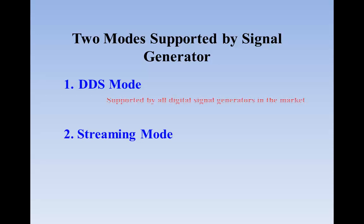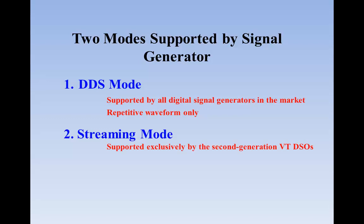Unique Feature 7: Streaming mode in signal generator. The second-generation VT DSOs support two signal generator modes: DDS mode and streaming mode. DDS mode is supported by almost all digital signal generators in the market. One limitation of DDS is that the generated signal has to be replicated from the waveform stored in the DDS buffer. Although its frequency can be varied, the waveform, although it can be arbitrary in shape, is fixed once the generator starts. Unlike other signal generators in the market, the second-generation VT DSOs support streaming mode in its signal generator as well. Streaming mode provides more functionality than DDS mode. Basically, it can generate absolutely arbitrary signals.